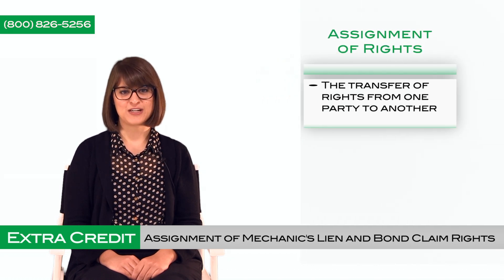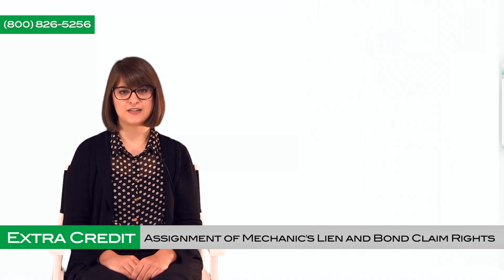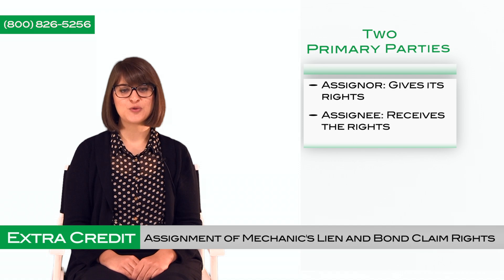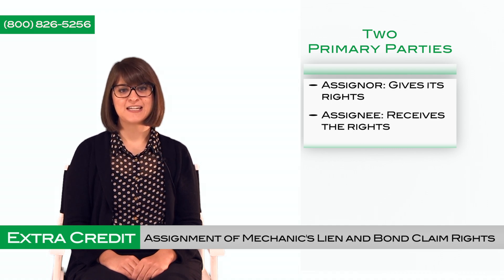What is an assignment of rights? Assignment is the transfer of rights or interest from one party to another. For example, if a subcontractor has mechanics lien rights, it may opt to assign its mechanics lien rights to a third party. There are two primary parties: the assigner and the assignee. The assigner is the original owner of the rights, or the party that is giving its rights to another. The assignee is on the receiving end — the rights are given to, or assigned to, the assignee.